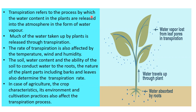Transpiration refers to the process by which the water content in plants is released into the atmosphere in the form of water vapor. Much of the water taken up by plants is released through transpiration. The rate of transpiration is also affected by temperature, wind, and humidity. The soil water content and the ability of the soil to conduct water to the roots, as well as the nature of plant parts including buds and leaves, also determine the rate of transpiration. In agriculture, crop characteristics, environment, and cultivation practices affect the transpiration process.